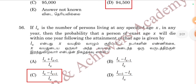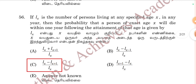If LX is the number of persons living at any specified age X, then the probability that a person of exact age X will die within 1 year is given by: Option C, LX minus LX-plus-1 divided by LX. Option C is correct.